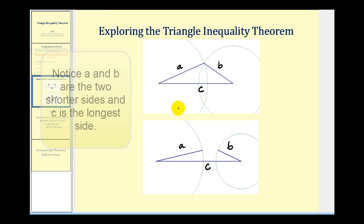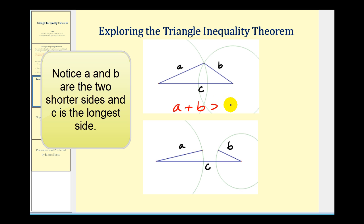In this first diagram, the length of A plus the length of B would be greater than the length of C. And the reason we know that is, if we think of A as the radius of the circle on the left, if we line it up along C, it would extend from here to here.